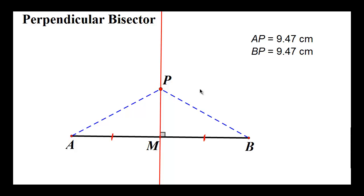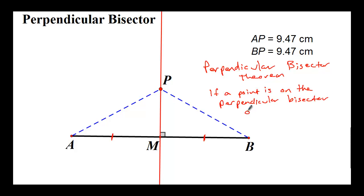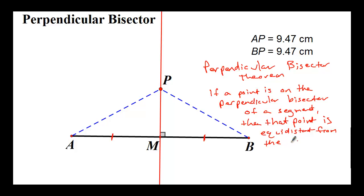That sounds like a theorem, and it is. It's called the Perpendicular Bisector Theorem. It states: if a point is on the perpendicular bisector of a segment, then that point is equidistant from the endpoints of the segment.